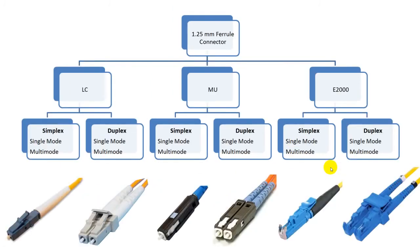The next major type of single fiber connectors has a 1.25mm diameter ferrule. The most common one is the LC connector. LC was developed by Lucent. It has a snap coupling mechanism and a 1.25mm ferrule. LC connectors are available in both simplex, which holds 1 fiber, and duplex, which holds 2 fibers.